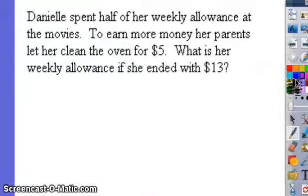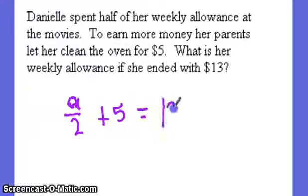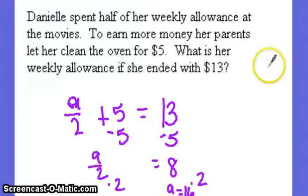Danielle spent half of her weekly allowance at the movies. So allowance divided by 2. To earn money, her parents let her clean the oven for $5. She got 5 more dollars there. She has $13 now. So there's the equation. Solve. A divided by 2 is equal to 8 times 2 times 2. A is equal to 16. And finally, that is all we have for writing and solving equations. Thanks for listening.